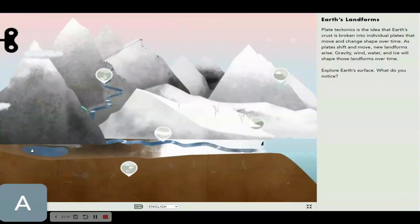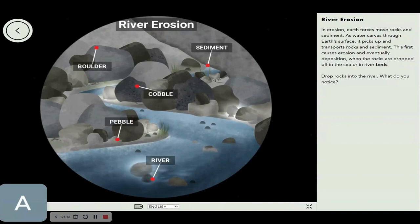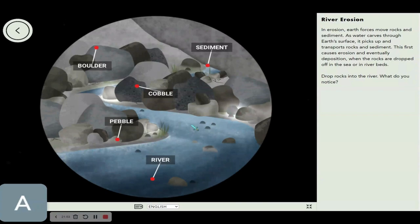We've only got about five more. Let's make this quick. River erosion. Earth forces move rocks and sediment. As water curves through earth's surface, it picks up and transports rocks and sediment. You can see it right here in action. Pretty cool, huh?